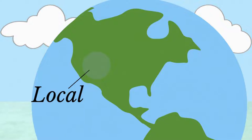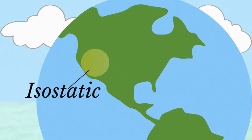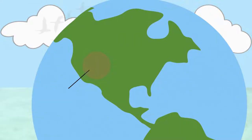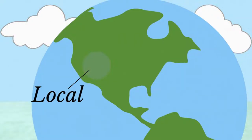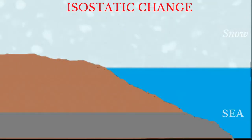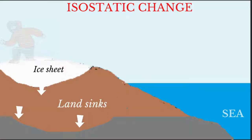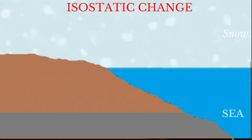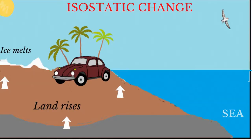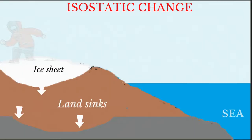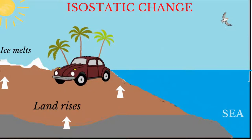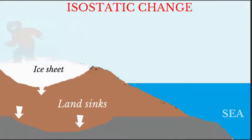Isostatic sea level changes are local changes caused by subsidence or uplift of the crust. This may either be the result of changes in the weight of the ice sheets on the land or to growth or erosion of mountains. An example of isostatic sea level change resulting from climatic conditions is when large ice sheets covering the land during the ice age cause the land to sink down because of the weight of the ice sheets.